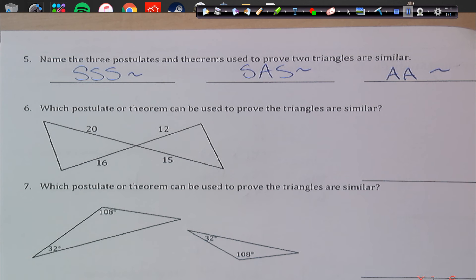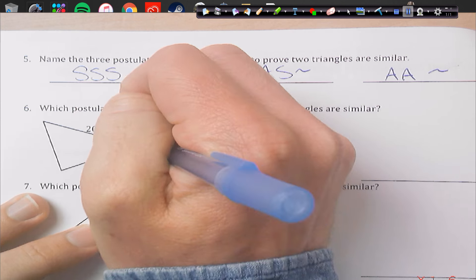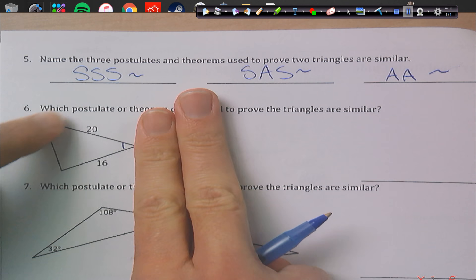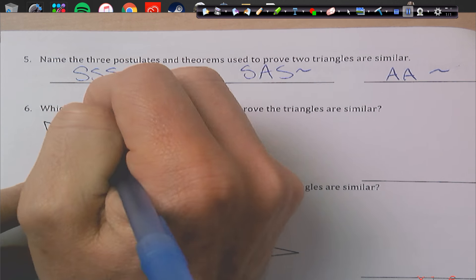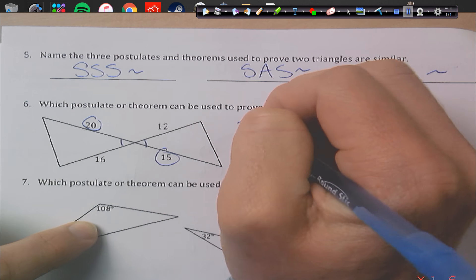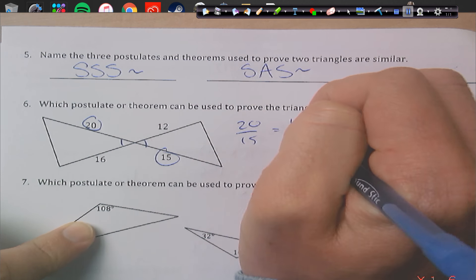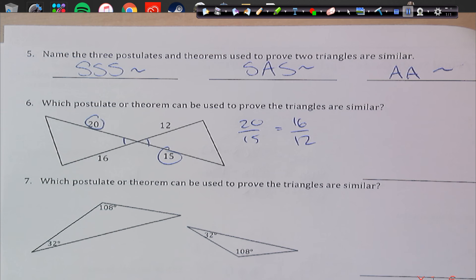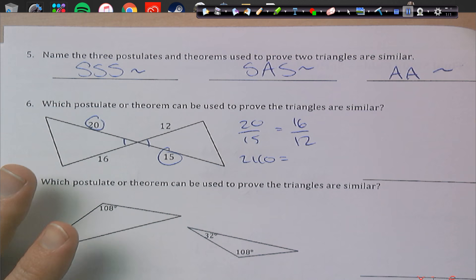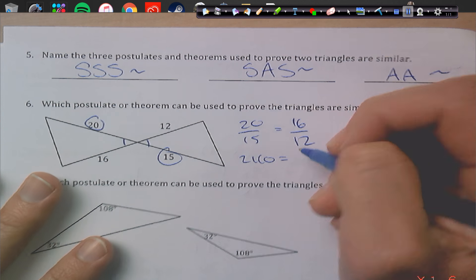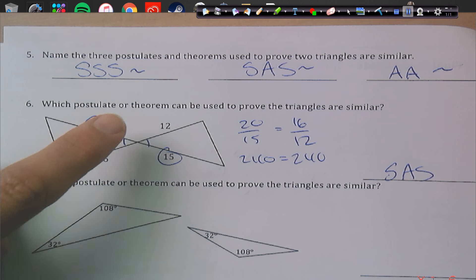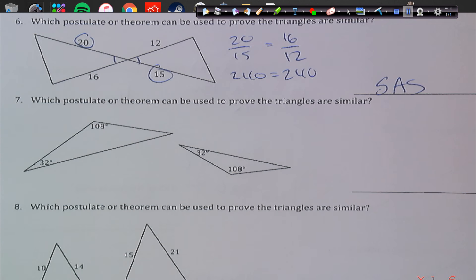Which possible are there to be used here to prove the triangles are similar? Well, they share an angle here, and then what we're going to do is we're going to match things up. So over here, the big side is 20. Over here, the big side is 15. So we're actually going to match those two guys up. So 20 to 15 should equal 16 to 12. So if that proportion works out, then I know we're in business. So we get 240 equals 240. So that's going to be side, angle, side. Notice the angle is included between the two similar sides.